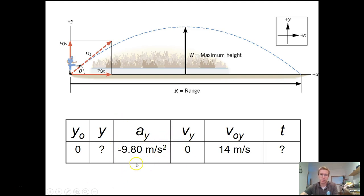Our acceleration in the y direction is gravity: negative 9.80 meters per second squared. You'll see it rounded to negative 9.81 or even just negative 9.8 — both are within acceptable error. Our v_yi is 14 meters per second, and at the maximum height, the final velocity in the y direction is 0.